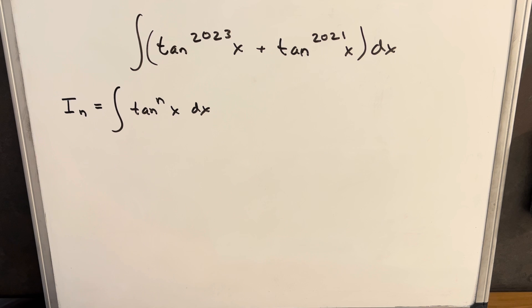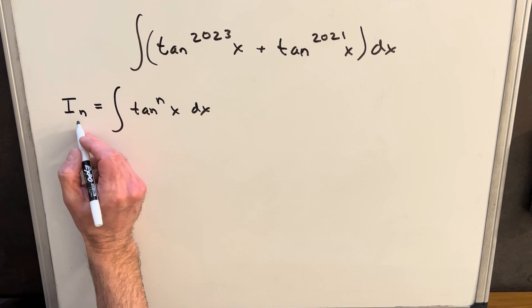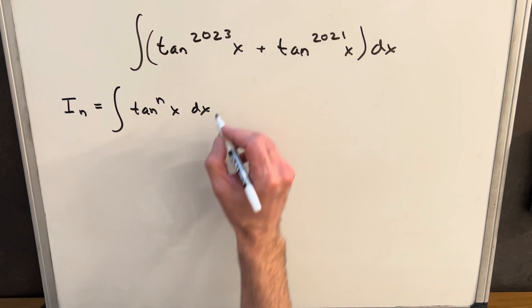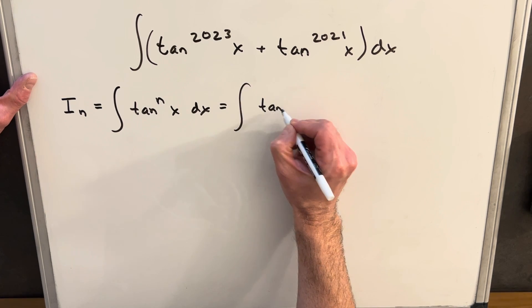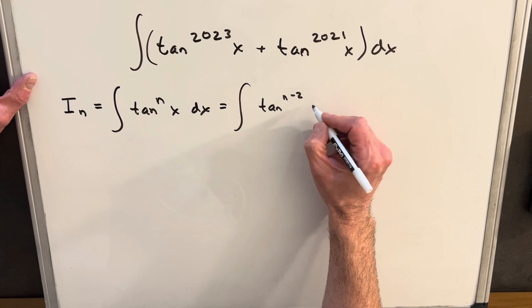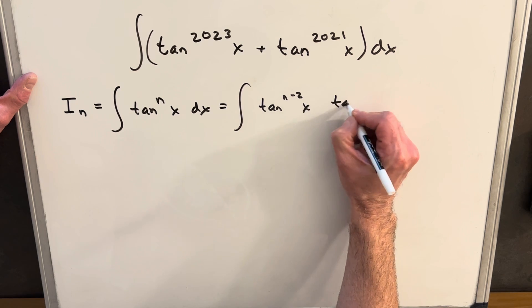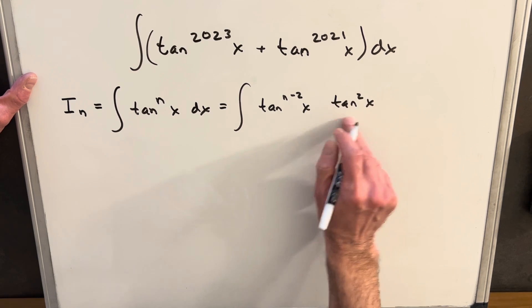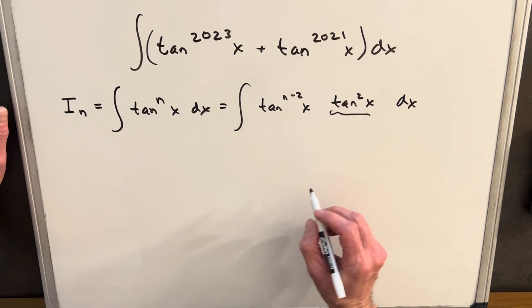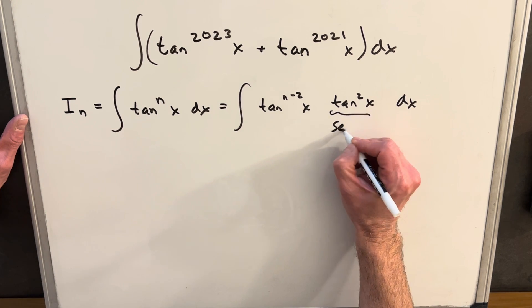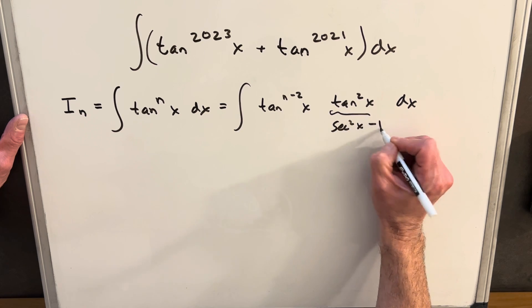So we're going to call our tan to the n, so whatever any large power of tangent, we'll call it our i sub n. And then what I'm going to do on this is let's just break this out as tan n minus 2x times tan squared x. Just noticing that when you multiply this together, you get back to n. But then we have an identity for tan squared, and that's going to be just secant squared x minus 1.